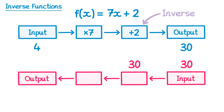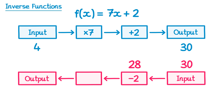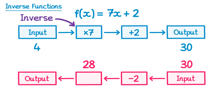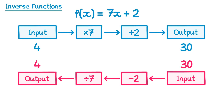Every time we get to an operation we do the inverse. So we had plus 2 in this box — the inverse of that is subtract 2, so 30 take away 2 is 28. Then we move to the next box, which was multiply by 7, so the inverse is divide by 7. 28 divided by 7 is 4, and we end up with the output of 4, which was the input of the original function.